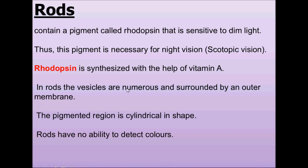In rods, the vesicles are numerous and surrounded by an outer membrane. The pigmented region is cylindrical in shape. Unlike cone cells, rod cells have no ability to detect color. Please note that rod cells are more numerous — around 120 million — and are more sensitive than cones; however, they cannot detect the colors of an object.